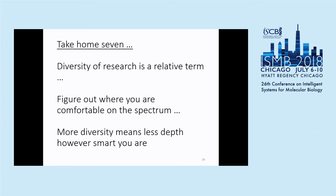Take home seven: diversity of research is a relative term — figure out where you're comfortable on the spectrum. More diversity means less depth, however smart you are. It behoves you to be really honest with yourself about where you exist on that spectrum, because that's what you should strive to be. Don't try to be something you're not. For me, at this point, I'm much more comfortable doing a lot of things broadly than doing a couple of things very deeply. You have to find out where you are for yourself.